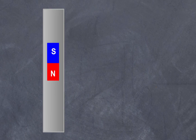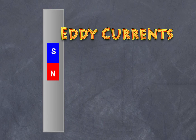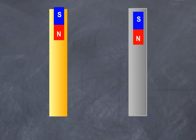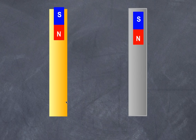Welcome to High School Physics Explained. Today I'd like to briefly explain how eddy currents are formed through an understanding of Lenz's Law. In particular, I want to refer to a demonstration often done in physics classes where a strong magnet is dropped down two tubes. Here are the two tubes shown in a diagram: one is plastic and the other is metal.